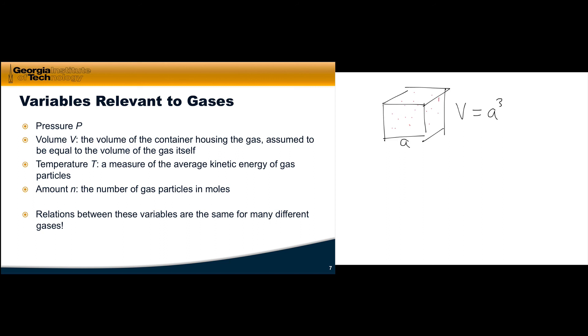Temperature is a measure of the average kinetic energy of gas particles. We'll see this in detail with the Maxwell-Boltzmann distribution. For now, higher temperature gases have molecules moving at faster speeds, while lower temperature gases have molecules moving slower. The amount n is the number of gas particles in moles.